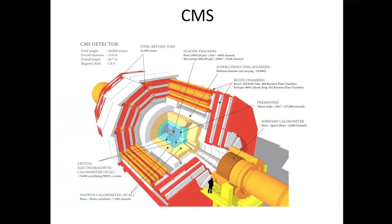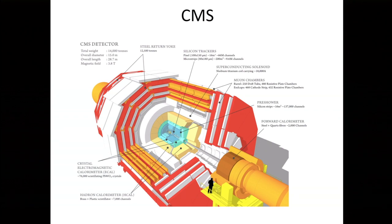Both detectors have 75 million pixels in the vertex detector, so when a charged particle enters there are 75 million possible recording points. From a theorist's point of view, you don't need to know that much about the difference between CMS and Atlas. CMS was designed with better energy resolution in the ECAL — using lead tungstate crystals for high granularity and better spatial resolution — while Atlas chose liquid argon because it's more radiation resistant.